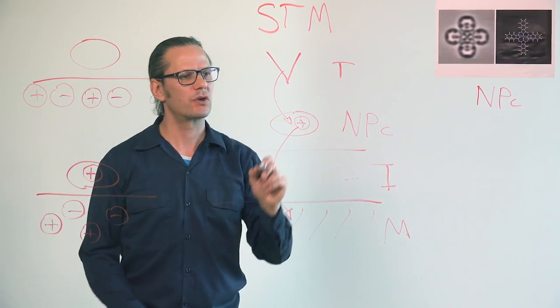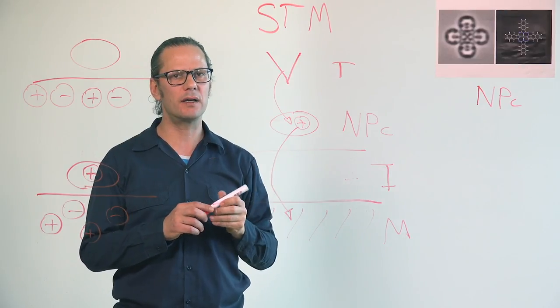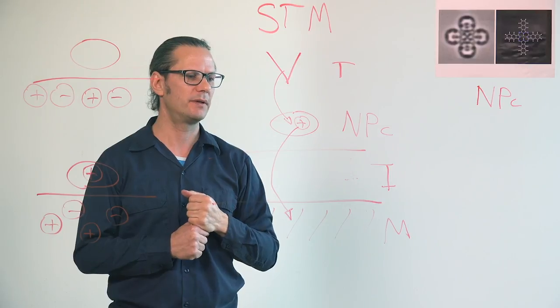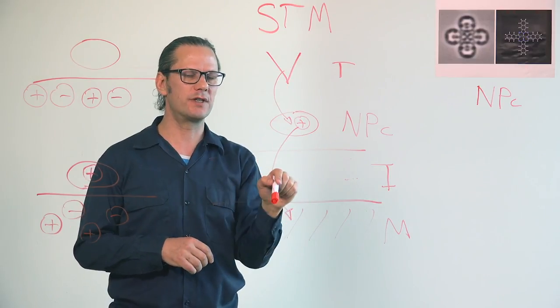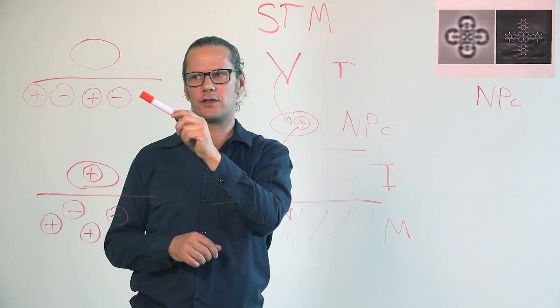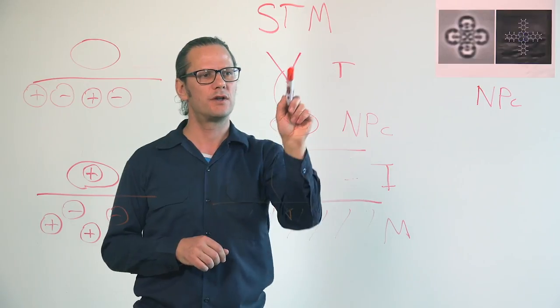You can measure currents down to about maybe a million electrons per second, which is 100 femtoamperes. You can measure energy transitions. The problem is, you can measure only one of those energy transitions. You can only measure the transition for charging.